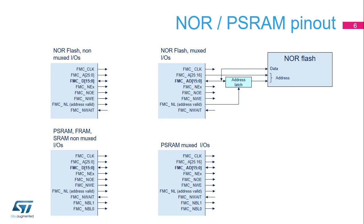The flexible memory controller supports non-multiplexed and multiplexed PSRAM, FRAM, SRAM and NOR interfaces. The non-multiplexed interface has separate address and data signals. The multiplexed interface drives the 16 address LSBs on the same pins as the 16-bit data. Thus, an external address latch is required to maintain the lower part of the address while the data is transferred. This latch is embedded in some NOR and PSRAM devices. The latch-enable signal is provided by the FSMC through the FMCNL output pin, named address valid NADV on some NOR Flash devices.